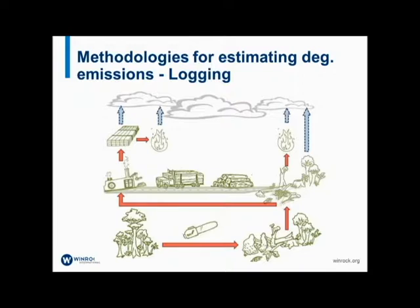The activity-based approach is often more cost-effective, transparent, and usually better at picking up small-scale impacts, focusing on what the emissions look like, where they're happening, and the associated greenhouse gas emissions. The downside is that if you're not specifically targeting an activity — for example, you include logging but not fuel wood — then any emissions from fuel wood won't be included. It also faces the challenge of accurately capturing regrowth that will happen.